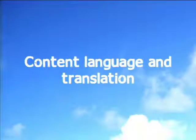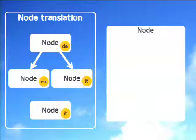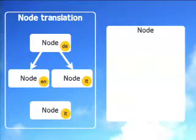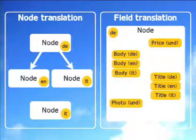Next up is content language and translation — our second silo. The problem here is we have two models of translation in Drupal 7. One is node translation, with a built-in UI and API in Drupal core — you mark a node German, translate it to English and Italian, and it builds two new nodes with a relation between them. And we have a parallel field translation system where instead of making copies of the node, you make copies of the fields — the body and title in German, English, and Italian.